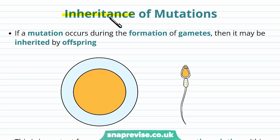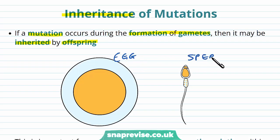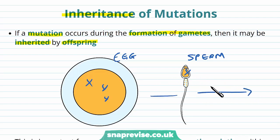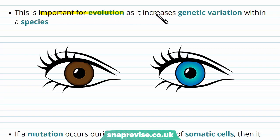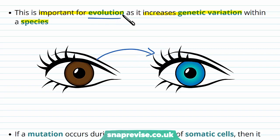Some mutations can be inherited — passed on — but it depends on the type of mutation. If a mutation occurs during the formation of gametes, then it might be inherited by the offspring, because the gametes, like egg and sperm cells, are what form the offspring. Mutations which happen inside either of these might be passed on. This is actually important for evolution — mutations can be very useful because they increase genetic variation within a species. These types of mutations led to different coloured eyes and many other features. If they're an advantage and help us to survive, this can improve our species and encourage evolution.